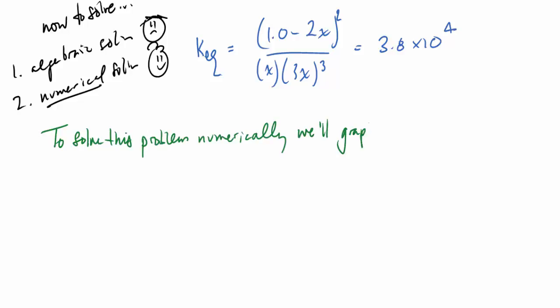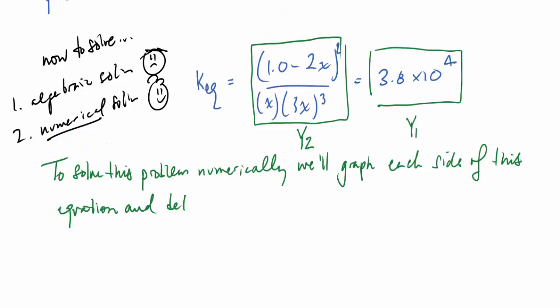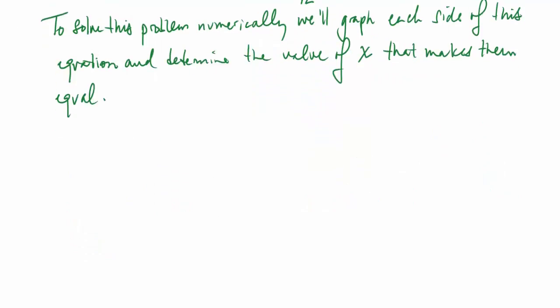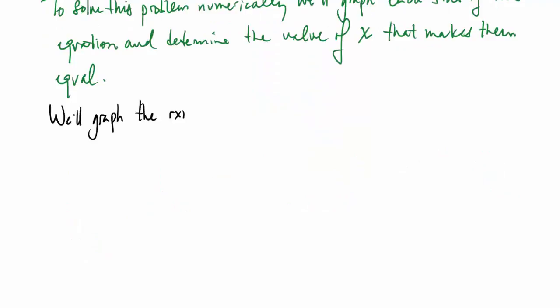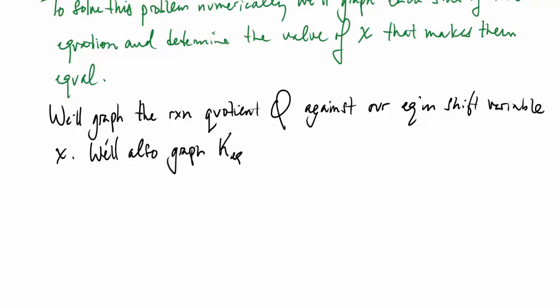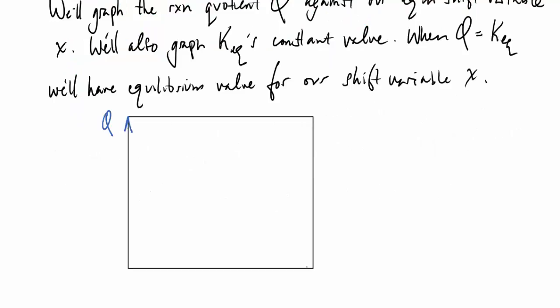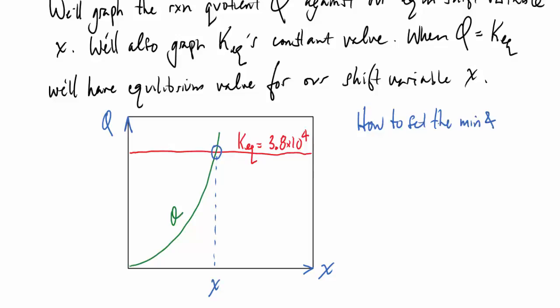So to solve the problem numerically, we're going to graph each side of the equation, y1 and y2 here, and we'll determine the value of x that makes them equal. So we'll graph the reaction quotient Q against our equilibrium shift variable x, and also graph Keq's constant value, and we'll see where the Keq and Q values meet. So here we're going to have Q and Keq on the left, we'll have our x, our equilibrium shift variable down there, a constant value of Keq, and we'll see that the reaction quotient Q changes with x, see where they meet, and that'll be our equilibrium value.